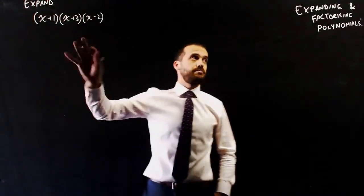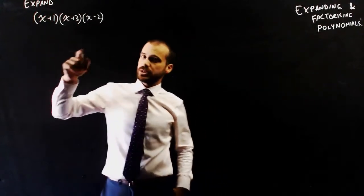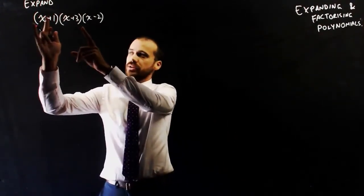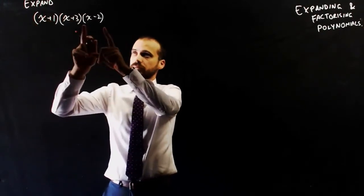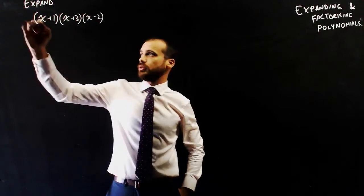Alright, so I'm going to expand this polynomial and then I'm going to factorize it. I'm going to do it forwards and I'm going to do it backwards. So to expand it, we multiply this bracket by this bracket using the FOIL method. And then once we've got that, we can multiply it by this bracket. So I'm going to move through it really quickly.